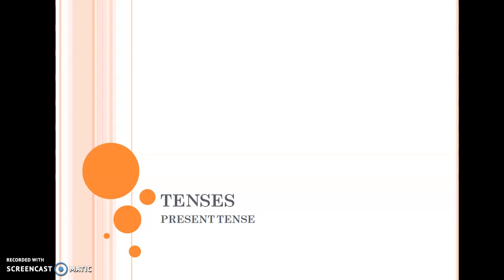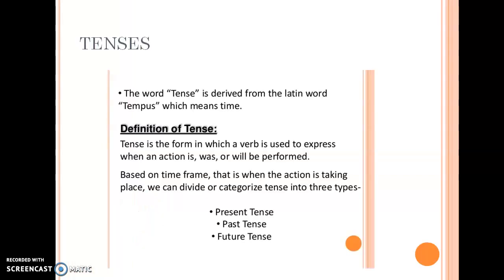Today we'll be talking about tenses, and under tenses I would be explaining the present tense. Tenses is the form in which a verb is used to express when an action is, was, or will be performed. Basically, tenses tell you about the time of an action — whether it happened in the past, the present, or the future.